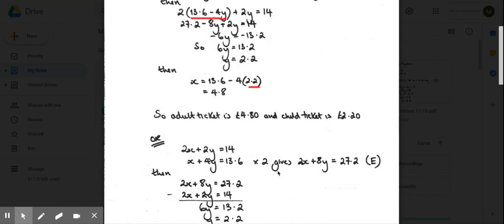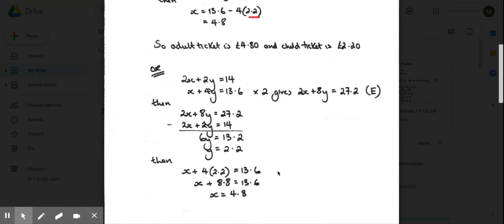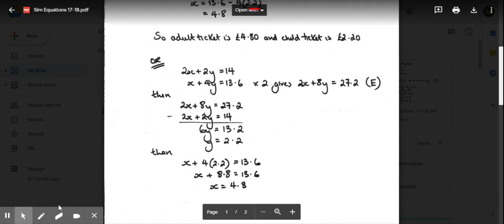I've also done it using the elimination method just to show you what happens here, so you can use both methods. For the elimination method, I've said I'm going to double the second equation, so that gives me 2x + 8y = 27.2. I've written both equations here. I'm going to eliminate the x, so I'm going to subtract. 2x disappears, 8y - 2y gives me 6y, and 27.2 - 14 is 13.2.